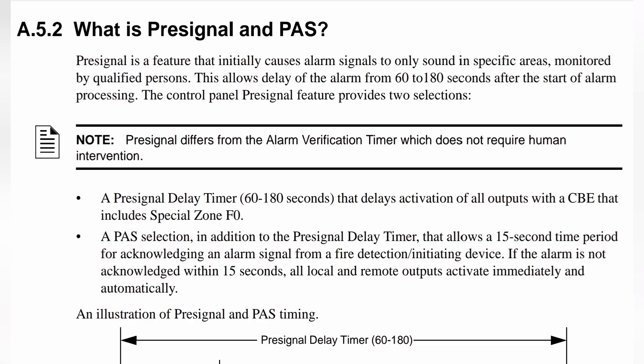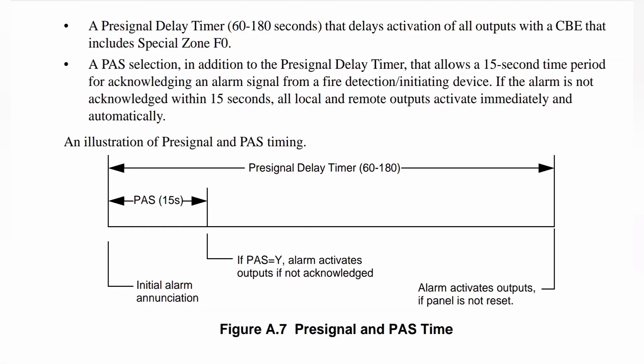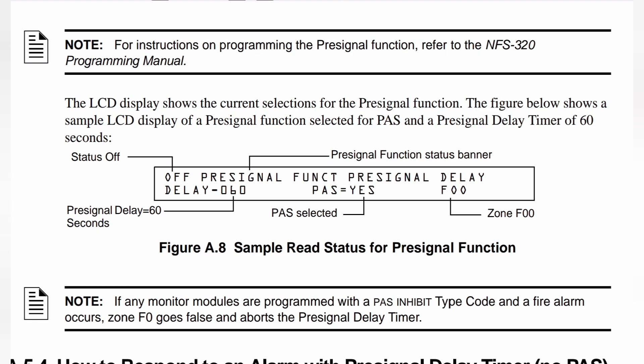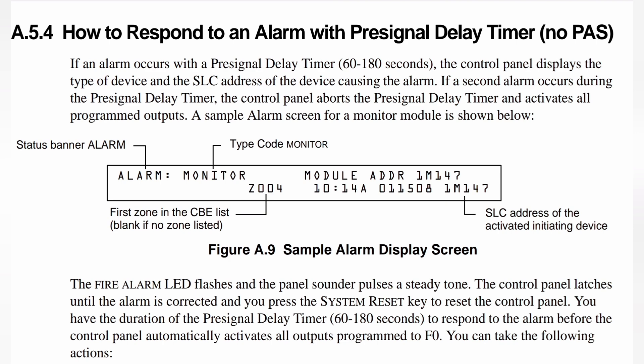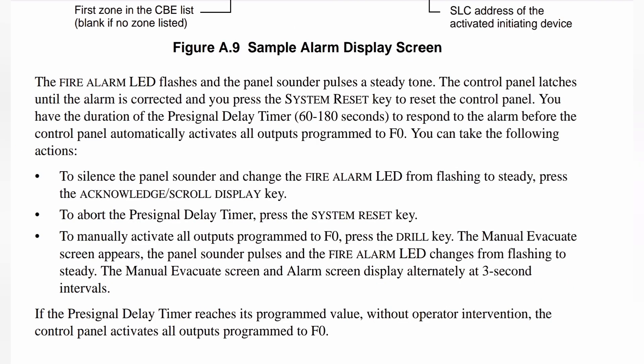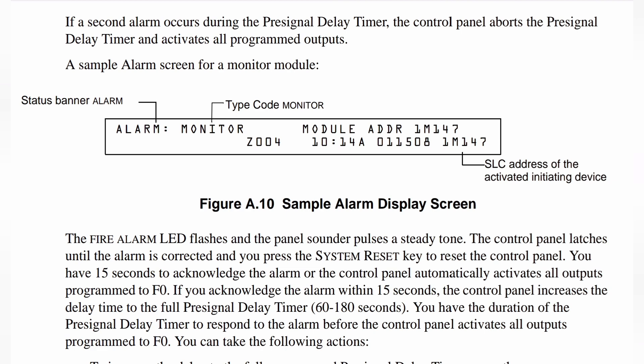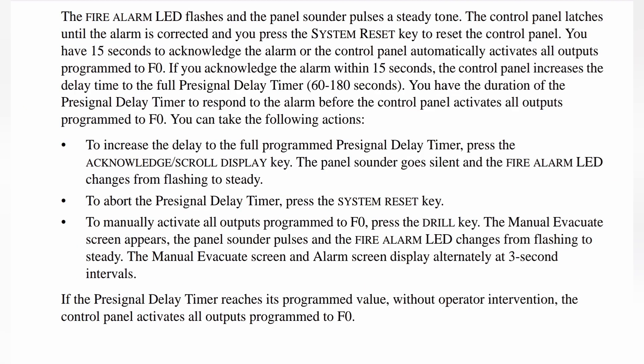The purpose is to give facility staff a short window of time to check the validity of the alarm before a full alarm activates and the building evacuation plan starts. Full activation occurs if trained personnel do not reset the alarm within a specified period of time, which can typically be programmed up to a three-minute delay, or if another device detects fire conditions.